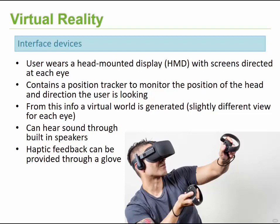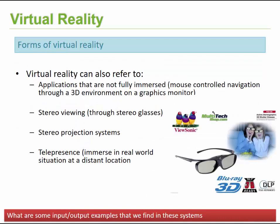With haptic feedback you would be able to feel objects as you interact with the 3D world. There are different forms of virtual reality you may have already experienced: when you play games they simulate a 3D environment you interact with using mouse and keyboard. There's also stereo viewing using stereo glasses, as seen in 3D movies at cinemas or with red-and-blue glasses for 3D photographs, stereo projection systems, and telepresence systems that immerse you in a real-world distant location.